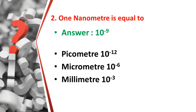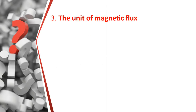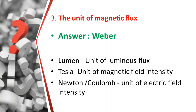The third question: what is the unit of magnetic flux? The answer is Weber — spelled W-E-B-E-R. Some related facts: lumen is the unit of luminous flux, tesla is the unit of magnetic field intensity, and newton per coulomb is the unit of electric field intensity.